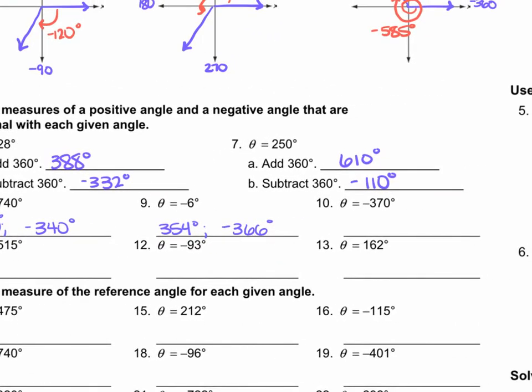For number 10, if we take negative 370 and subtract 360 from it, we get negative 10 degrees. And then if we add 360 to it, we get 350 degrees.